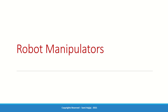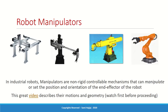From the previous discussion we agreed that robot manipulators are the first part of the robot. Essentially it's the device that manipulates the position and orientation of the end effector so that the end effector can do its purpose, be it a gripper or a tool or anything else.